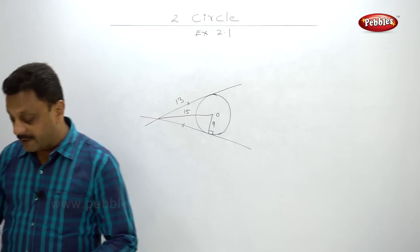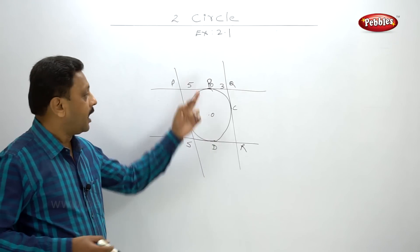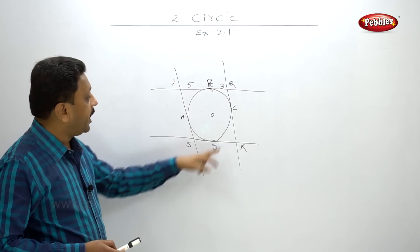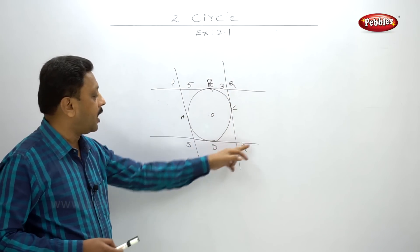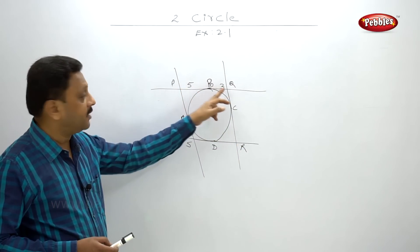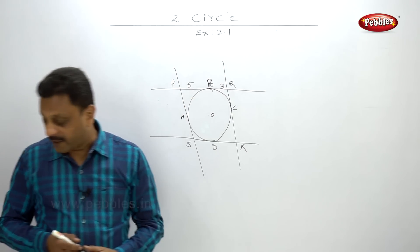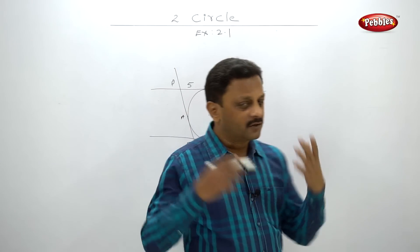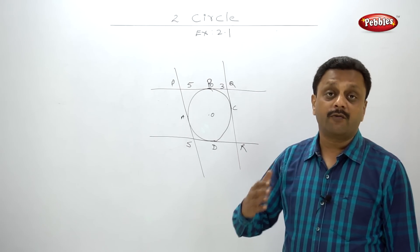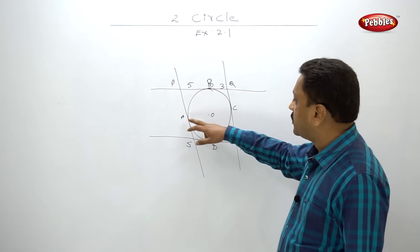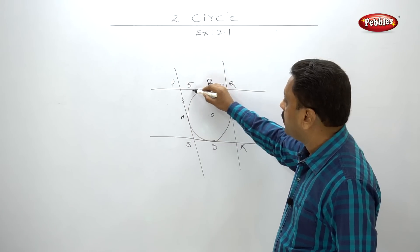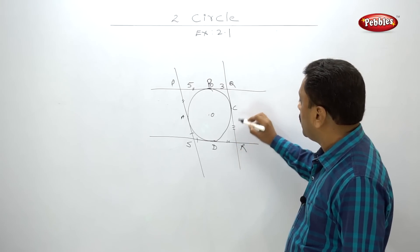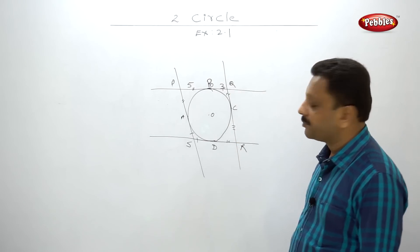Problem number 8: a circle with center O has four tangents forming a parallelogram. Touching points are A, B, C, D and endpoints of the parallelogram are P, Q, R, S. PB and BQ are given as 5 and 3 respectively. We have to find the length of PS. Since these are tangent segments, they must be equal.